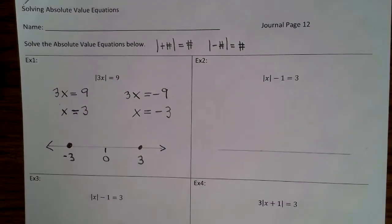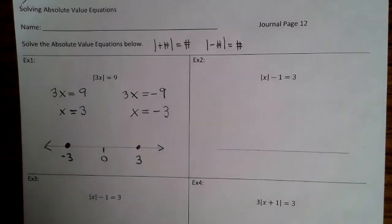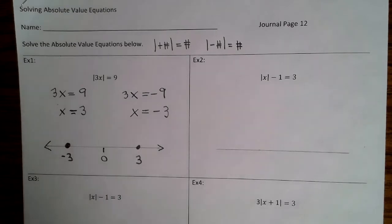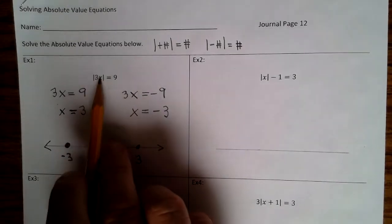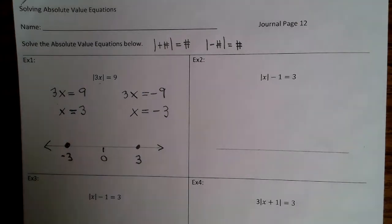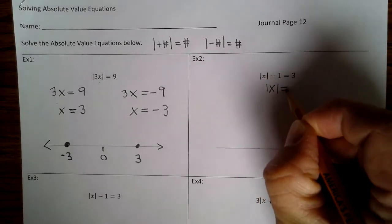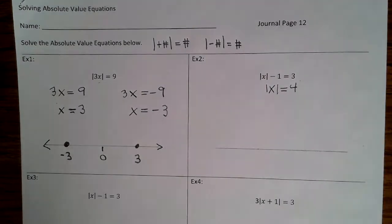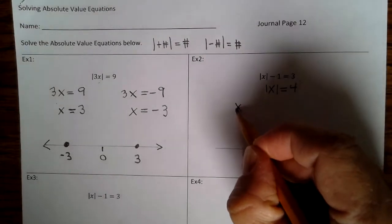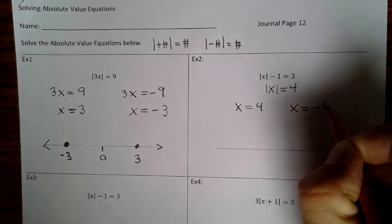Go ahead and finish up example 1. All right, example 2. Step 1 is we're going to isolate the absolute value — we didn't have to do that in example 1 because it was already isolated. So we're going to add 1 to both sides, so the absolute value of x equals 4. Now we apply the definition: x equals positive 4, x equals negative 4.